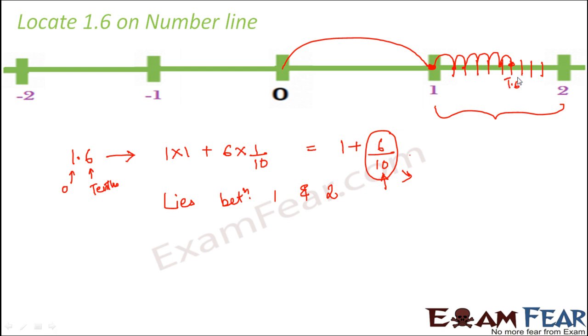This would be somewhere here. So 1.6 would lie here. This is how we need to locate decimal numbers on the number line. So what you need to do, first you expand the decimal number to see which are the two integers between which this decimal number lies. Once you got that idea, then you divide the region between those two integers into 10 equal parts.